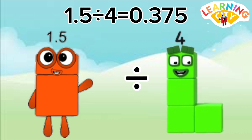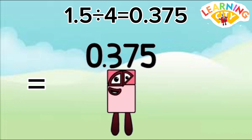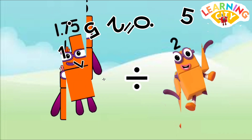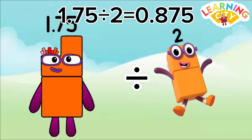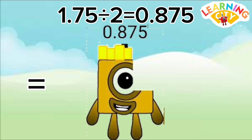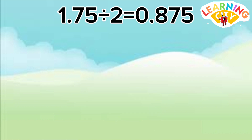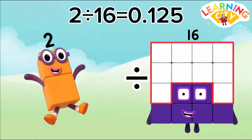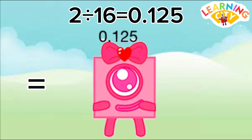1.5 divided by 4 equals 0.375. 1.75 divided by 2 equals 0.875. 2 divided by 16 equals 0.125.